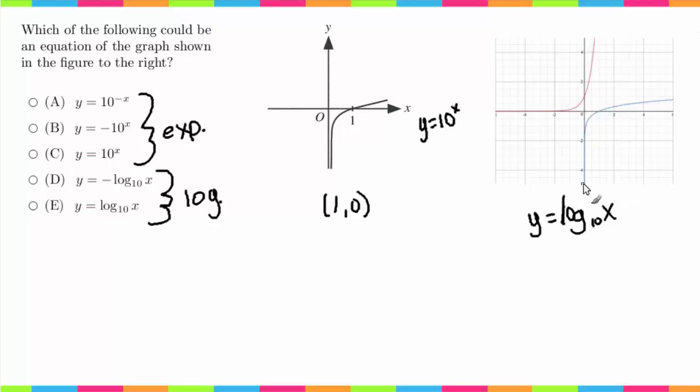The only other thing you may want to do to check D is recognize that what this negative sign does—this negative sign flips it over the x-axis. So after we did that to this graph, it would look something like that, so we know it's not D.